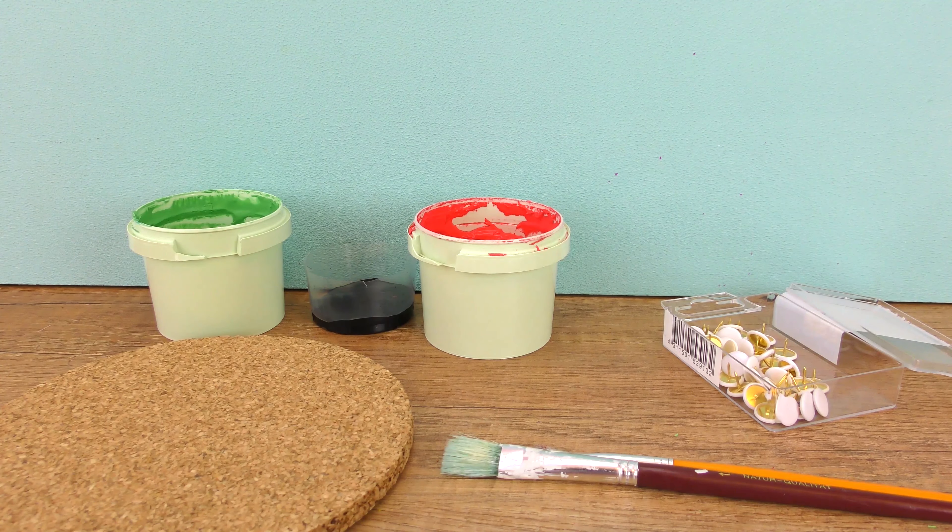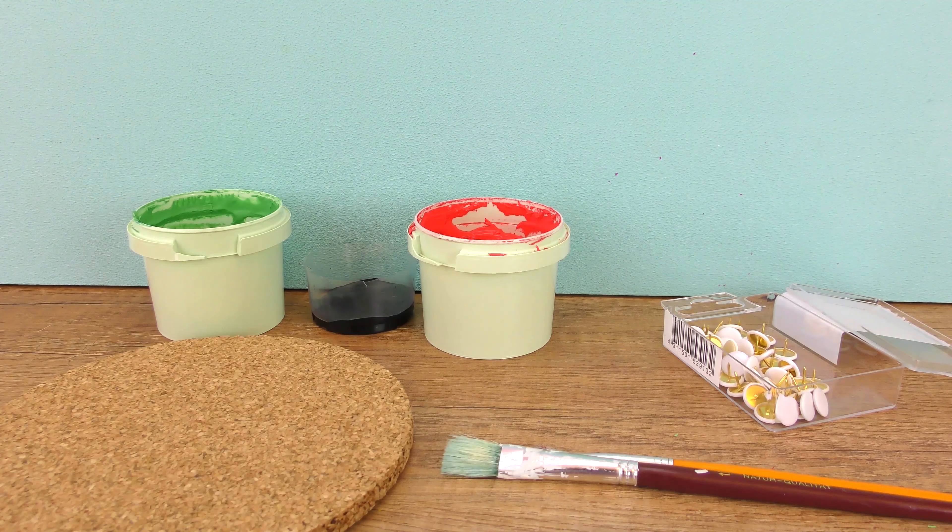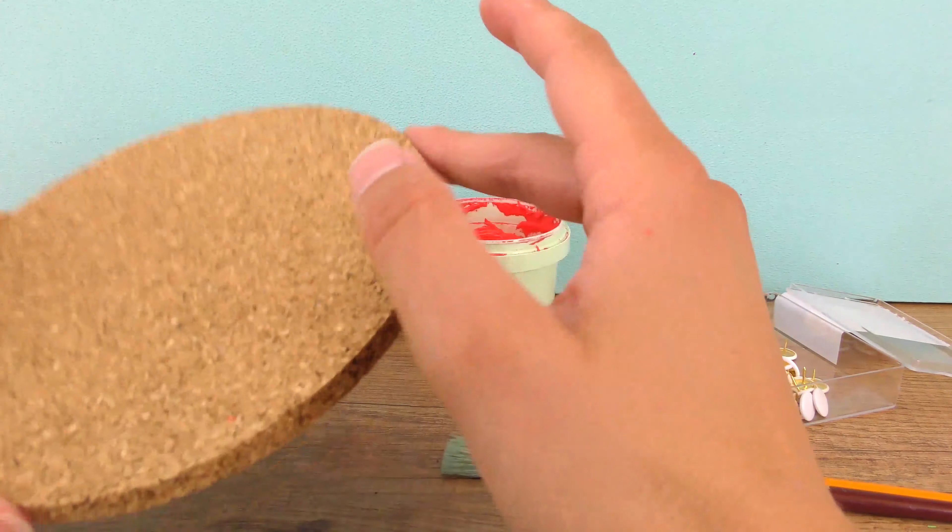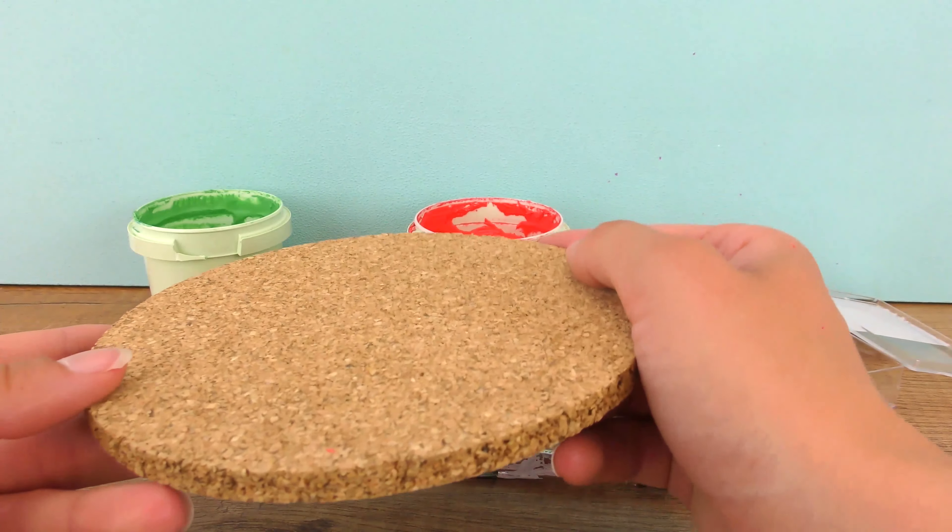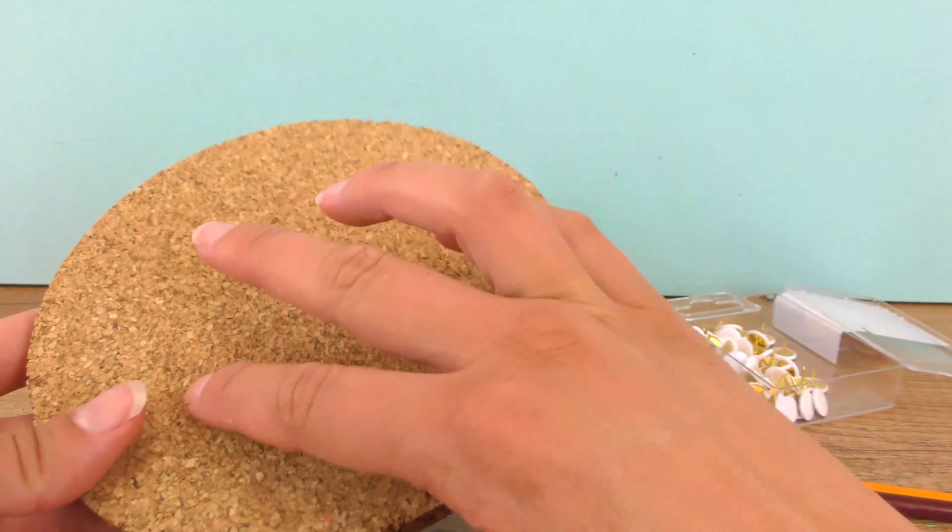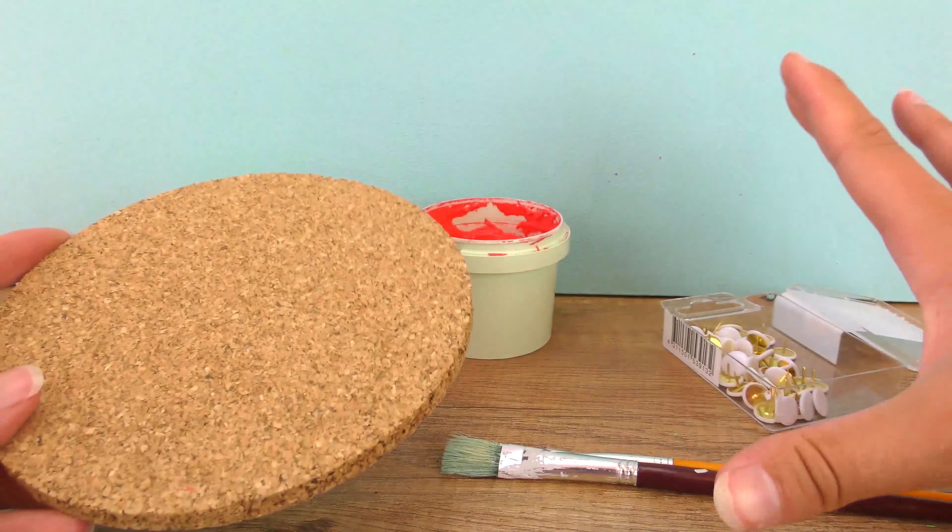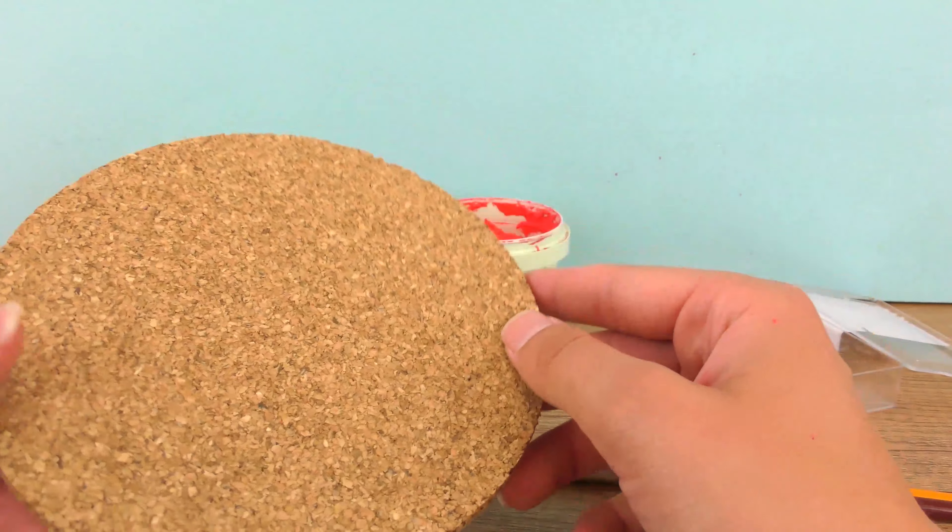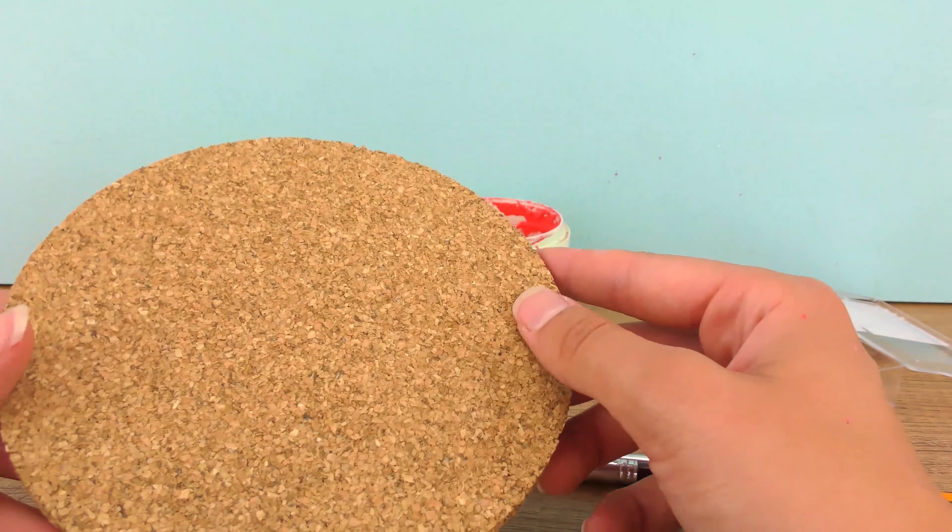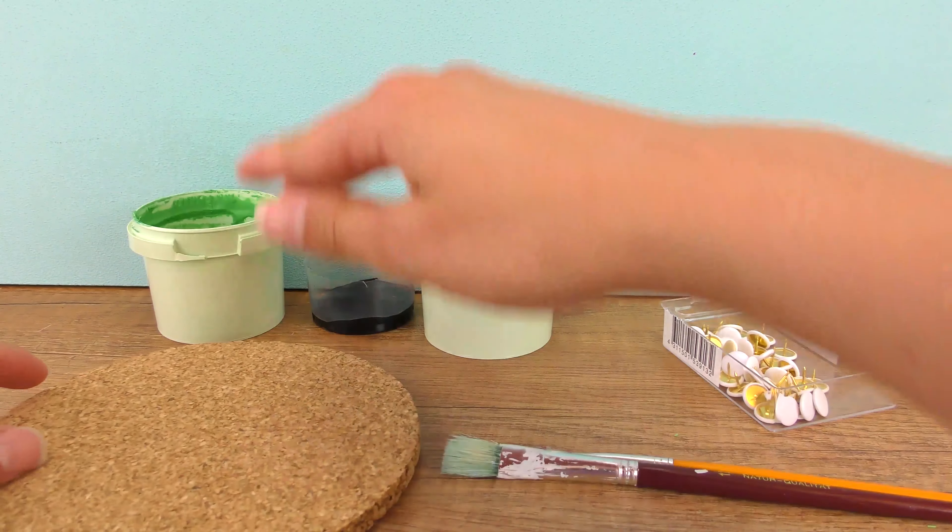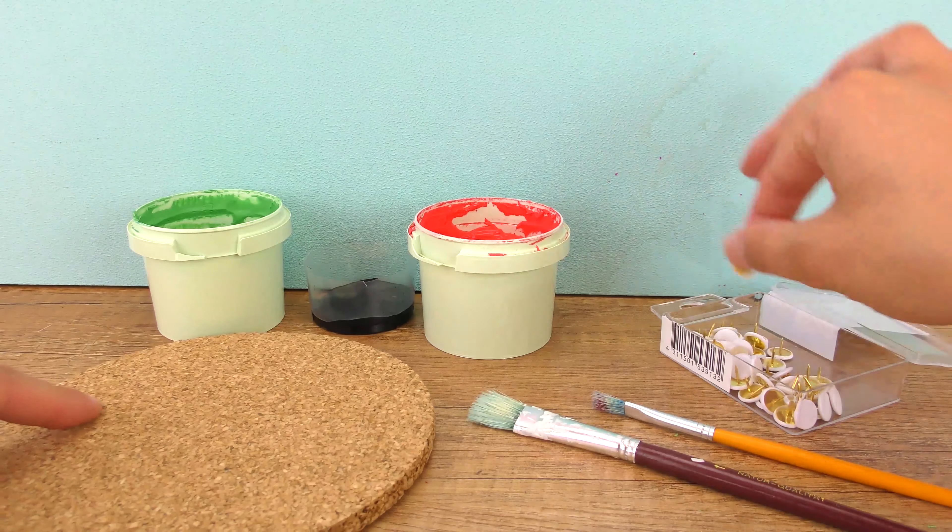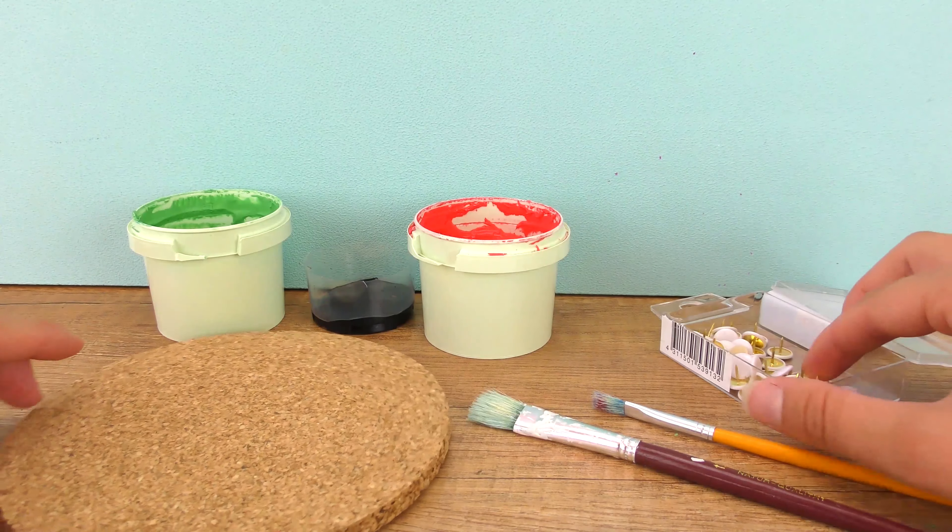Idea number two is a cork board, so again something to organize your stuff with in a little bit different way. This is a coaster for pots and pans out of cork. This is a small one. Of course you can take bigger sizes if you like, and if you find them, different shapes as well. I'm doing a watermelon, so I have here green, black, and red paints, two brushes, and some pins that we're going to pin onto the board.